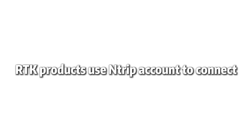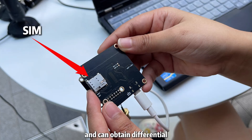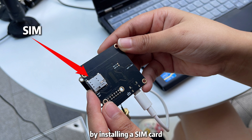RTK products use an nTRIP account to connect. The RTK sensor requires an nTRIP server account and can obtain differential RTK positioning data from the 4G network by installing a SIM card on the mobile terminal.